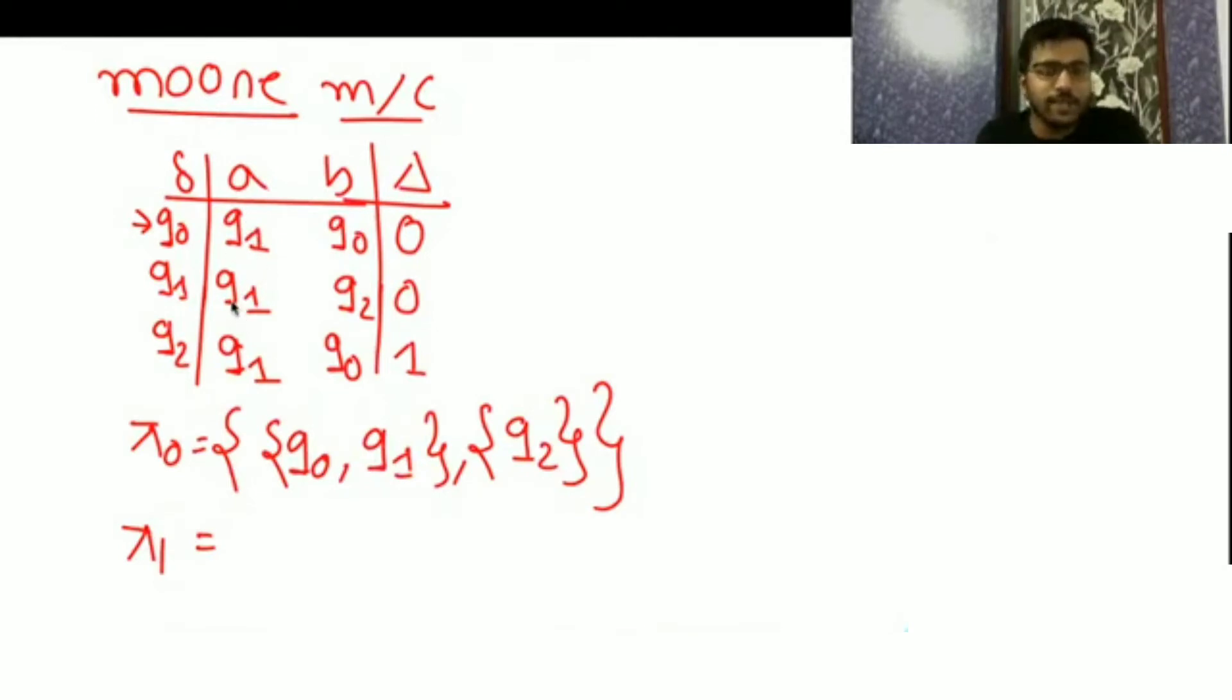So 0, 0, here 0, 0 break 1 is 0, 0, 0, 0. So in minimized Moore machine we require 3 states. Clear?